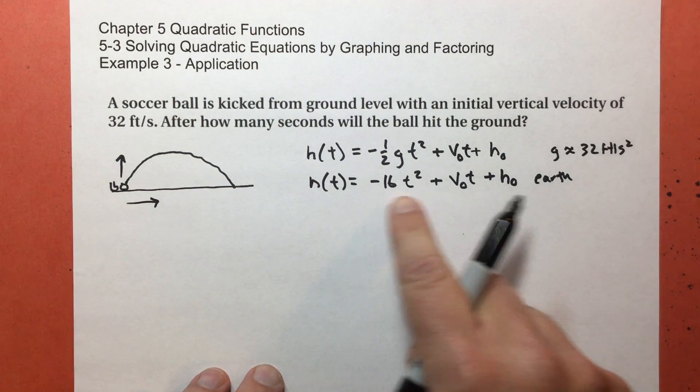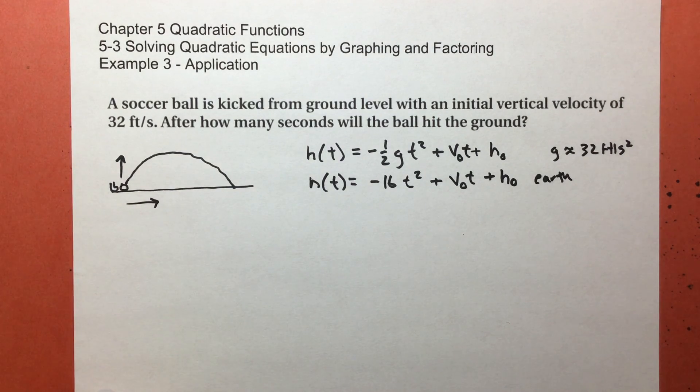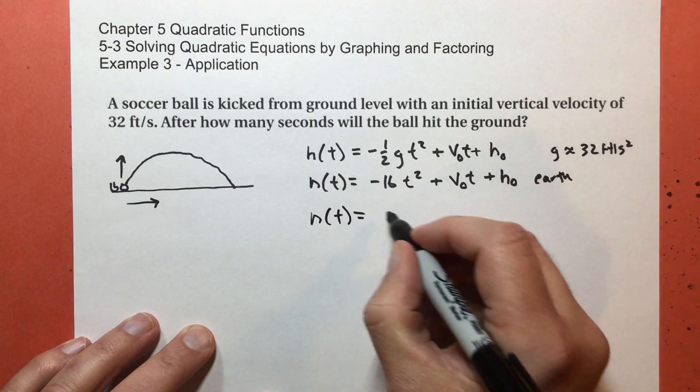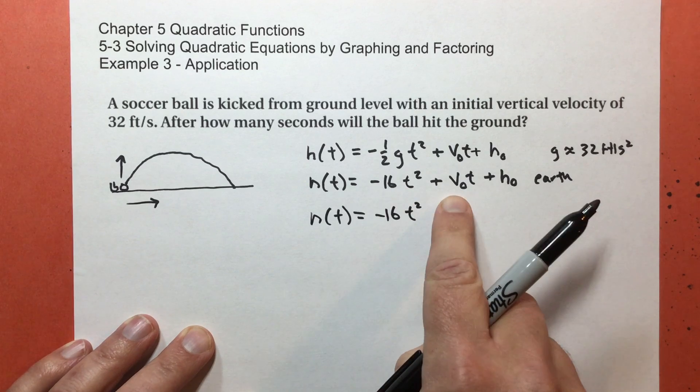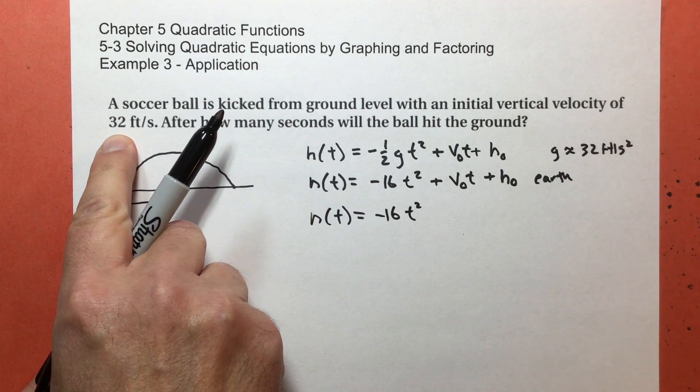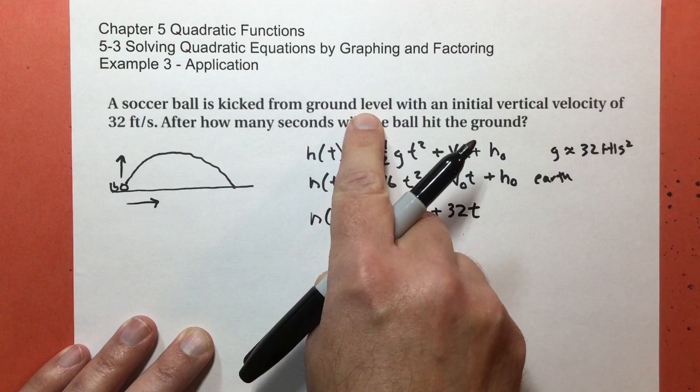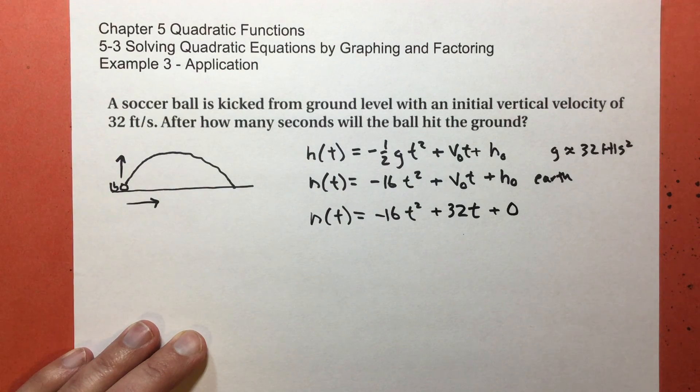All of these parameters are constants for this one time that the ball is kicked. They change when I kick it again. But for this one function, these parameters are constant. What are the constants that I know? So we have the height at time t is negative 16 t squared. The initial velocity, vertical velocity, the part going up, is 32 feet per second. So 32 t. And it says it's kicked from ground level, which means that the height is zero.